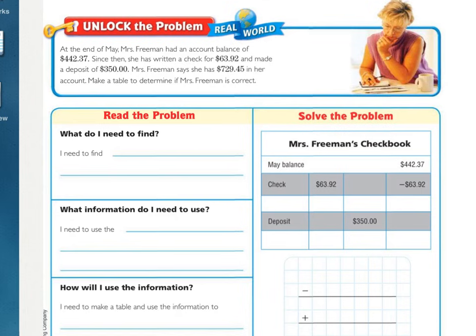Unlock the Problem. At the end of May, Mrs. Freeman had an account balance of $442.37. Since then, she has written a check for $63.92 and made a deposit of $350. Mrs. Freeman says that she has $729.45 in her account. Make a table to determine if Mrs. Freeman is correct.